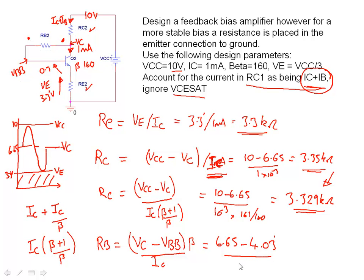All divided by 1 milliamp, 10 to minus 3, and I'll put on top of the bracket here our value of beta 160. If we do the math and calculate the numbers we end up with 360k.